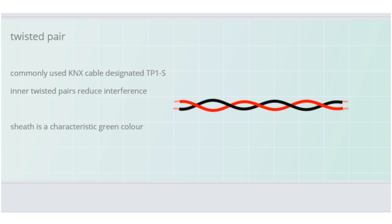The cable sheath is a characteristic green colour, defined by colour standard called RAL. It is defined as RAL6018.